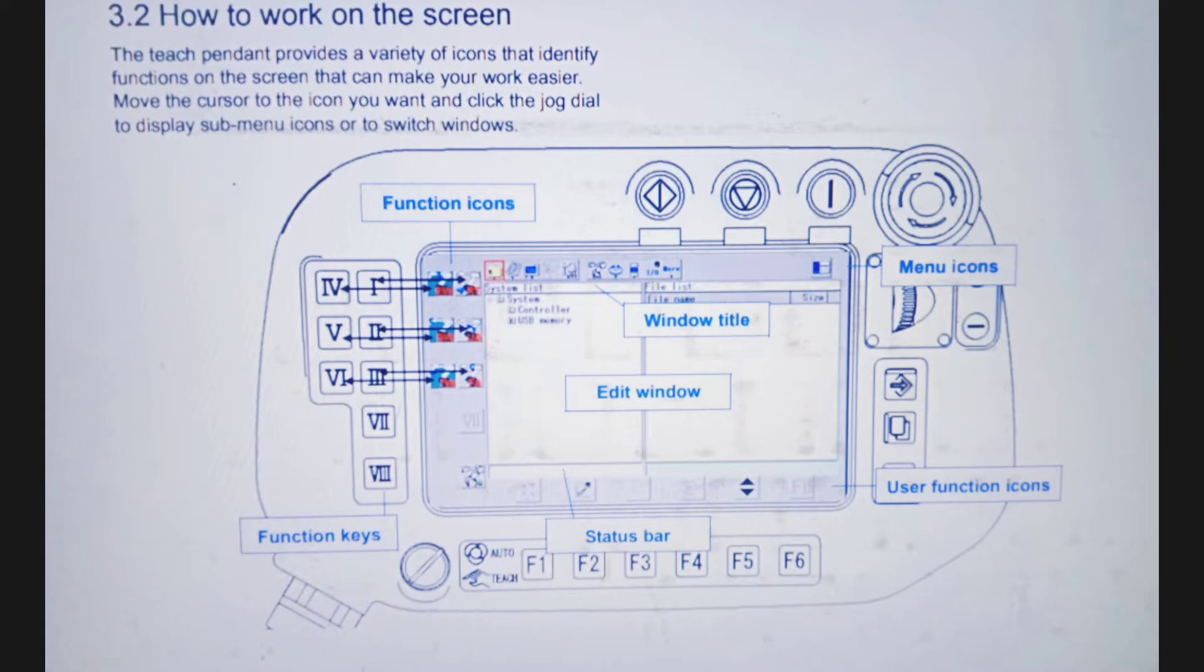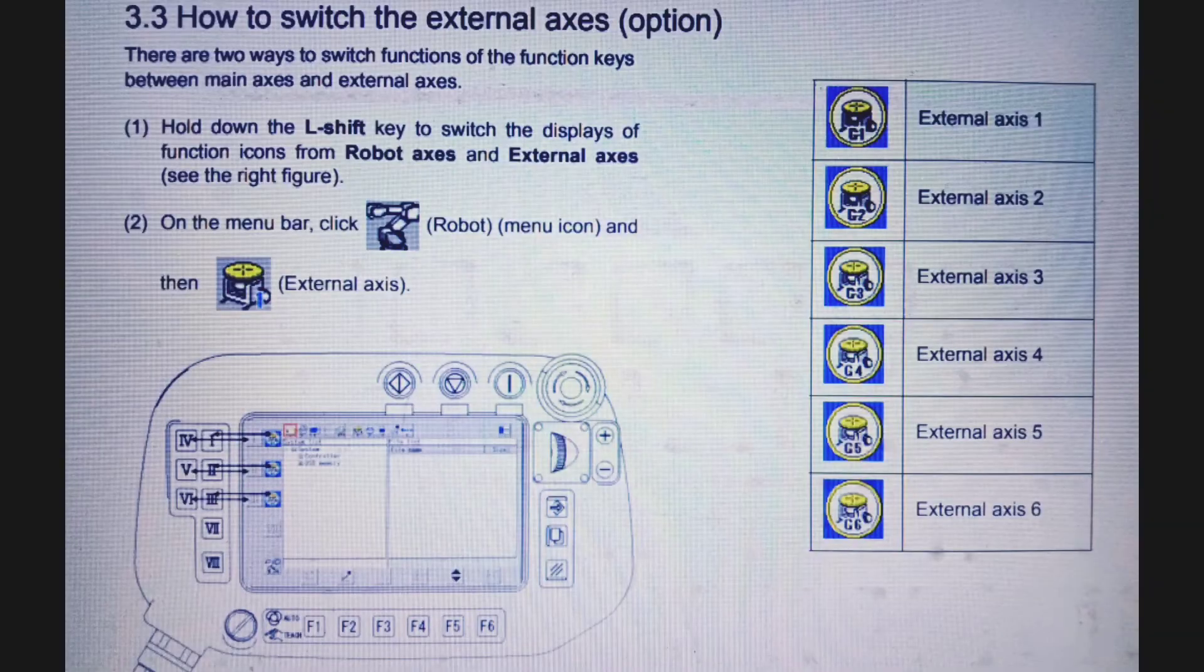F6 is the user function icons. This is the window title, menu icons, etc. All these are the very main keys and icons in the teach pendant. Now another one is how to switch the external axis option.